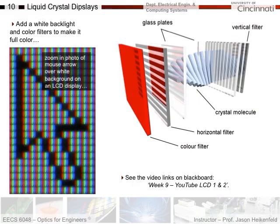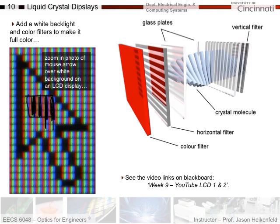To make a full-color LCD display for a smartphone, laptop, or TV, color filters are added in front of each subpixel — polarizer, liquid crystal, polarizer, then a color filter. A white pixel combines red, green, and blue subpixels together. To display red, the green and blue pixels are turned off. Mixed colors like yellow are created by combining green and red subpixels together.